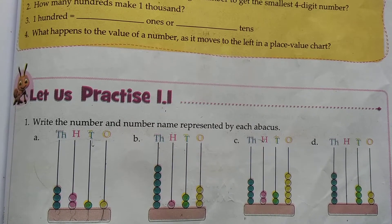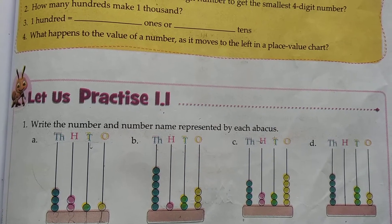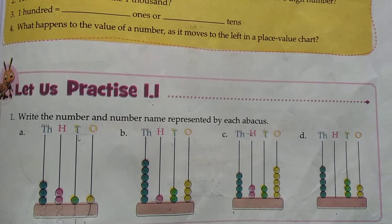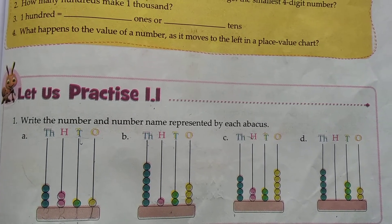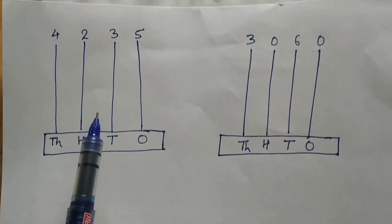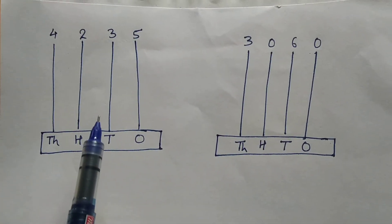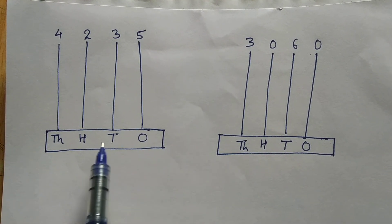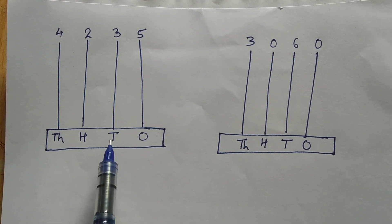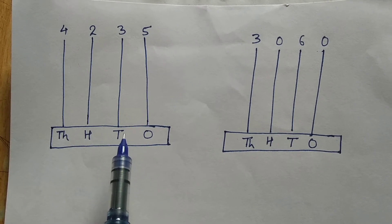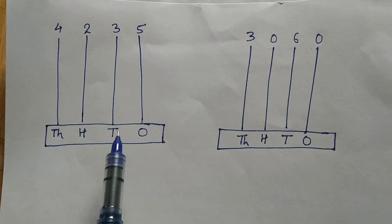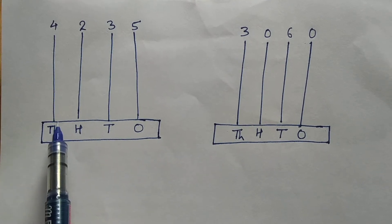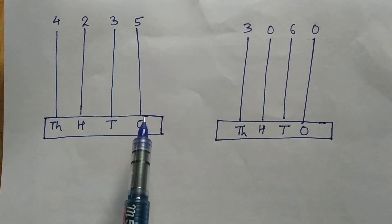Today I am going to teach you 4-digit numbers on abacus. These are abacus. To show a 4-digit numeral, an abacus should have 4 spikes: 1, 2, 3, 4. It should have 4 spikes.